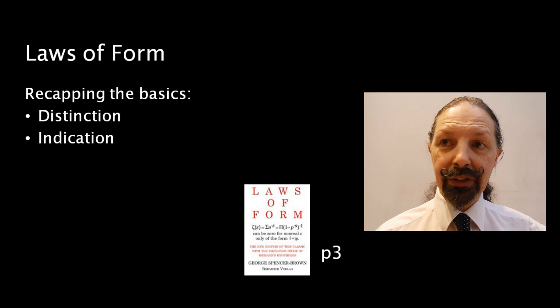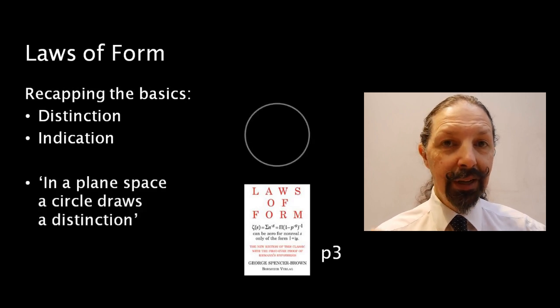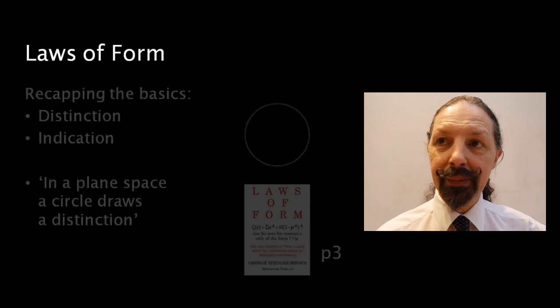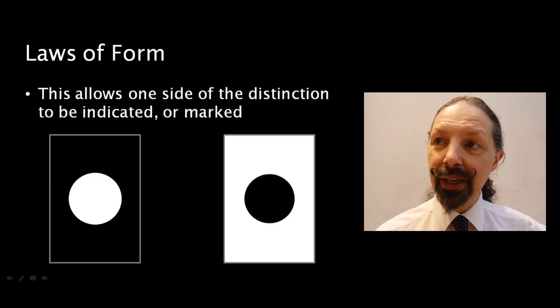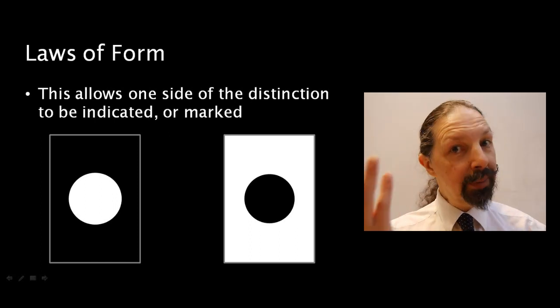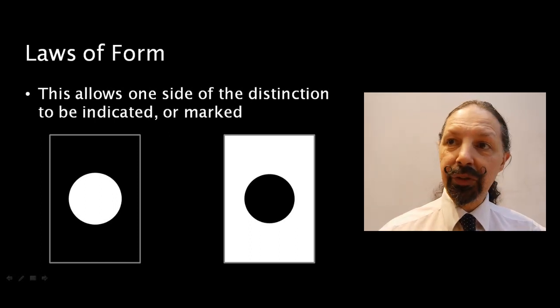And it all starts like this. In a plain space a circle draws a distinction. It's so simple. This allows one side of the distinction to be indicated or marked and that can be the inside or it can be the outside. It doesn't really matter.